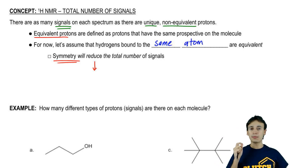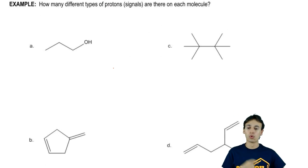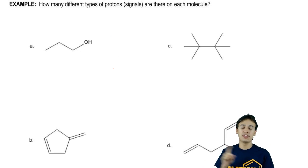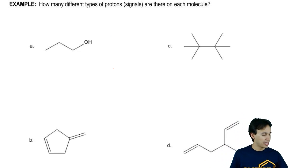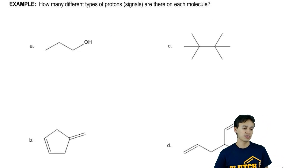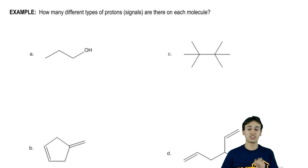What we're going to do is I'm going to go ahead and do practice problem A as a worked example and then I'll save the other three for you guys to do on your own. Let's just go ahead and read this question. It says, how many different types of protons or signals are there on each molecule? Let's look at A.